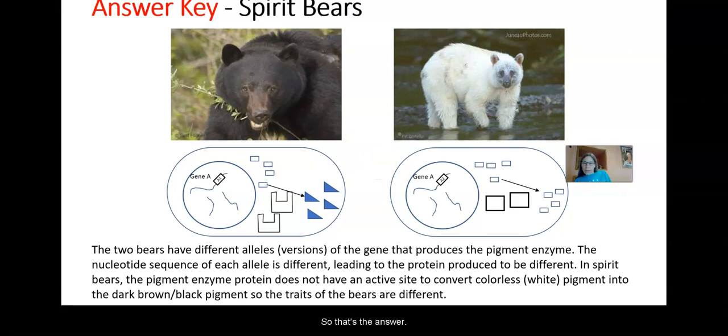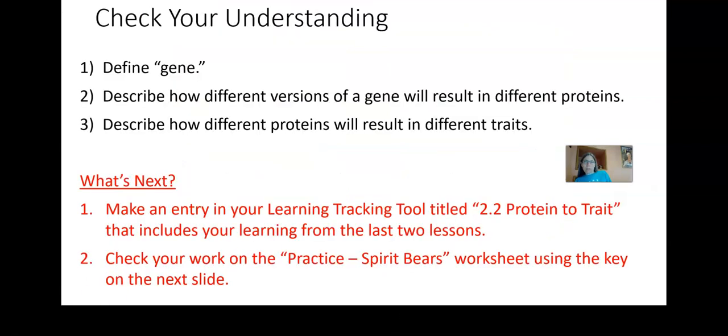Okay. So that's the answer for the practice problem. And that helps put together the big ideas about what genes are, what alleles are, and how you get different proteins from different alleles, and how sometimes those proteins might end up being nonfunctional. We are now at the end of this lesson. So at this point, you should be able to define a gene. You should be able to describe how different versions of a gene will result in different proteins. And you should be able to describe how different proteins will lead to different traits.